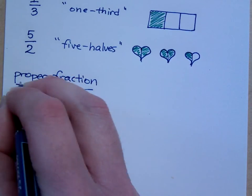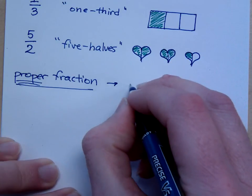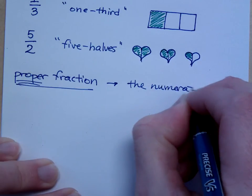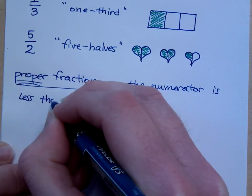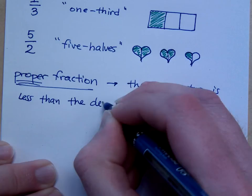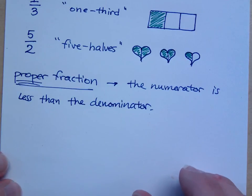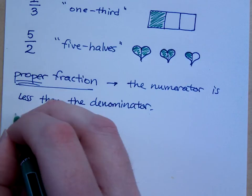A proper fraction. So a proper fraction is one where the numerator, the numerator is less than the denominator. Well, that means that the numerator is greater than or equal to the denominator. So if the numerator is greater than or equal to the denominator, that makes it improper.